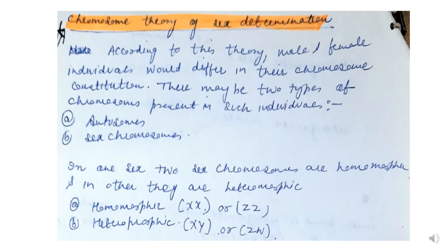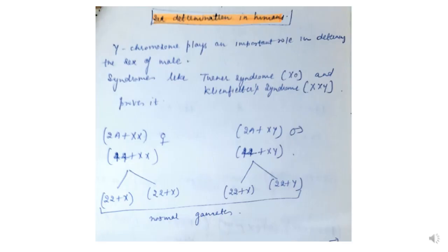As we have discussed before, the chromosome theory of sex determination says that males and females differ in their chromosome constitution. There are two types of chromosomes: autosomes and sex chromosomes. In one sex the two sex chromosomes are homomorphic, and in the other they are heteromorphic. For example, in humans homomorphic sex chromosomes are found in females (XX), and in birds it is ZZ. Heteromorphic is XY found in humans, and ZW found in birds, butterflies, and moths.